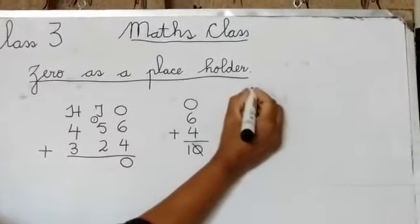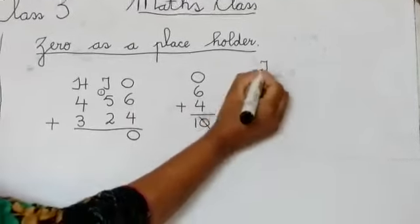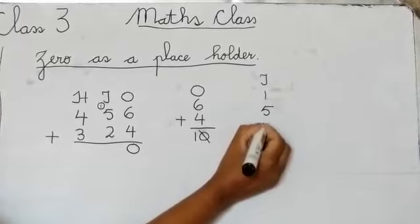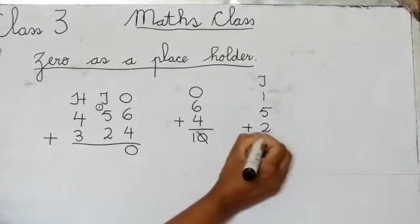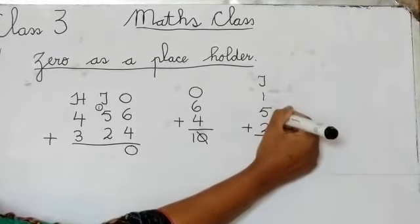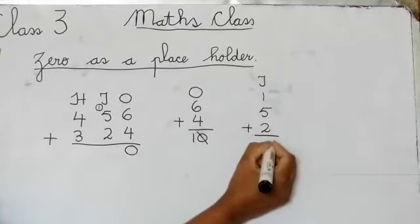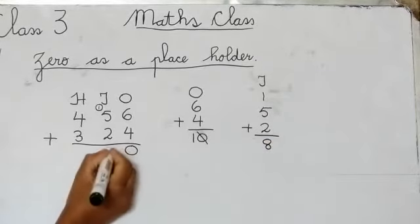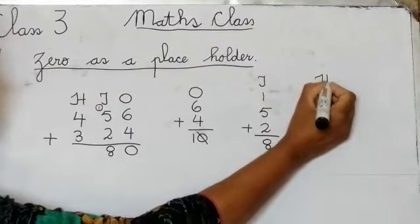Now the next step is we will separate our tens. So 1 plus 5 plus 2: 1 plus 5 is 6, 6 plus 2 is 8. I will put 8 under tens. Now the next step we will separate our 100s.